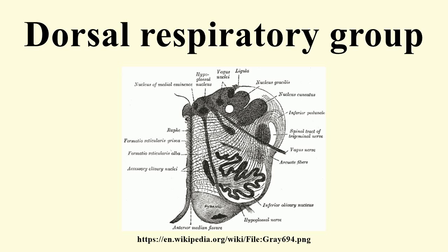The dorsal respiratory group is located in the dorsomedial region of the medulla, and is composed of cells in the solitary tract nucleus. The DRG is one of two known respiratory neuron localizations, with the other being the ventral respiratory group. The DRG is found in many types of fish and mammals.